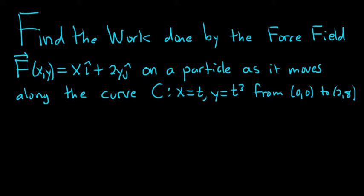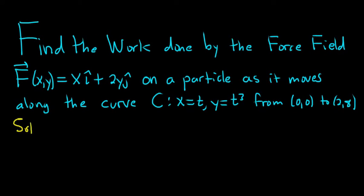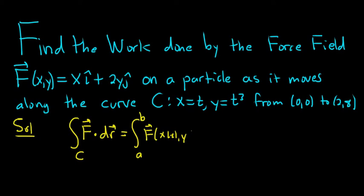Alright, so by definition the work done is the line integral of this vector field over this curve C, so solution. By definition the answer is just the line integral over C of F dot dr. And recall this is defined to be the definite integral from a to b of your vector field at x of t comma y of t dot r prime of t dt.